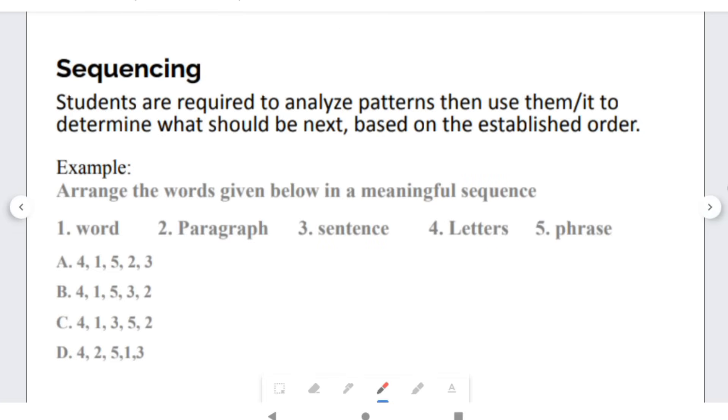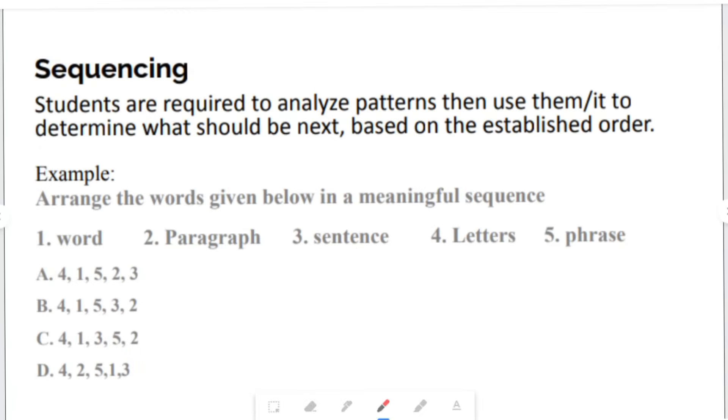Moving on to Sequencing. There are many different types of sequencing questions. For sequencing type questions, students are required to analyze patterns, then use them or it to determine what should be next, based on an established order. For this type of sequencing question, there is no established order. However, you are to arrange words given below in a meaningful sequence. You have word, paragraph, sentence, letters, and phrase. We all know that a letter would come first. If you realize all the options start with four. So, we know that a letter would come first. After we have letters, then we have words. So, one would come next. Then, after word, we can get phrases. So, five. So that's four, one, five. After phrases, we get sentences. So, that's four, one, five, three. And, the last one would get a paragraph. So, that option would be B.